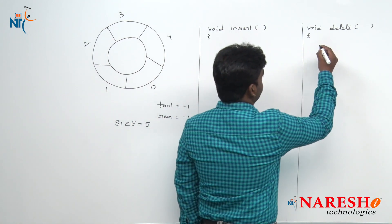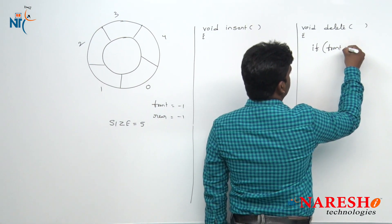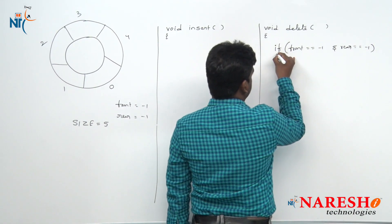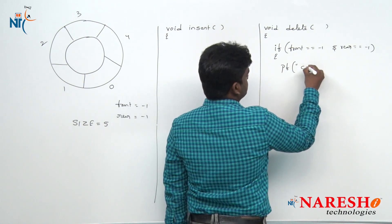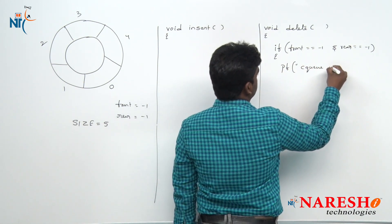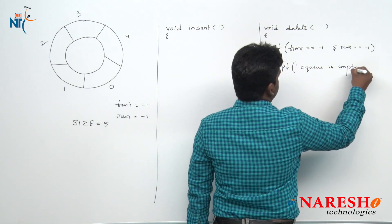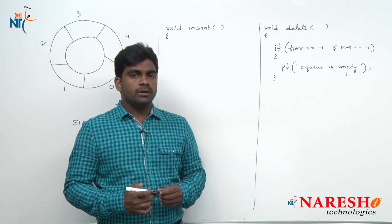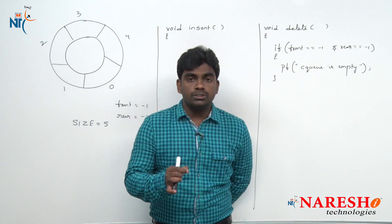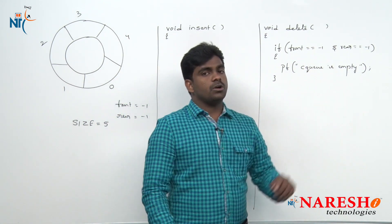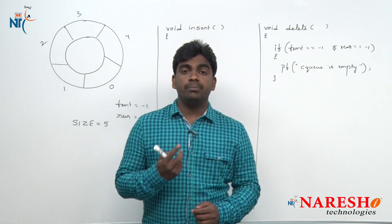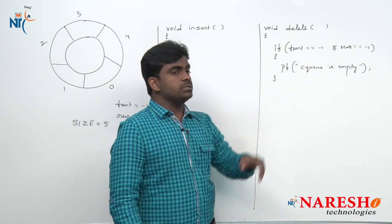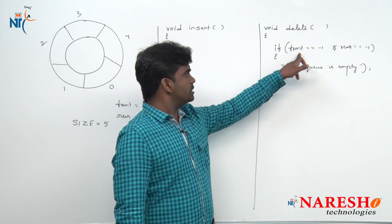So we are writing: if front equals minus 1 and rear equals minus 1, then printf 'circular queue is empty.' The reason is if you want to perform any deletion operation, we need to check whether elements are present or not in the queue. If the queue is empty, you cannot perform a deletion operation. That is why in the case of deletion, we need to check if the queue is empty or not.